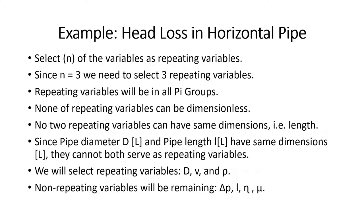Now select n — three — of the variables as repeating variables for mass, length, and time. Since pipe diameter and pipe length both have dimensions of length, we can't pick both as repeating variables — so we'll just pick diameter. Our repeating variables are diameter (D), velocity (V), and density (rho). The non-repeating variables for our example are pressure drop (delta P), pipe length, pipe roughness factor, and viscosity.